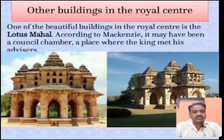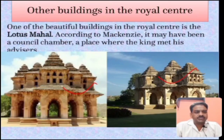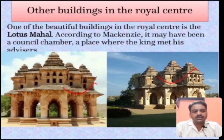There were certain other buildings found in the royal centre. You can see in the image that this place is known as the Lotus Mahal - one of the most beautiful buildings in the royal centre. According to Mackenzie, it may have been the council chamber - a place where the king used to meet his advisors. This could be the council chamber where the king held meetings with important people. However, there is no definite evidence whether council meetings were actually held here or not.